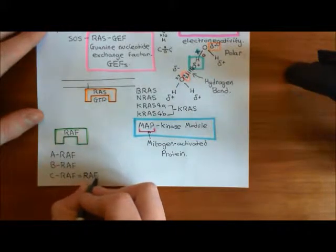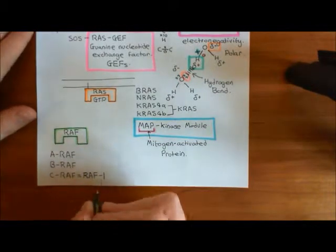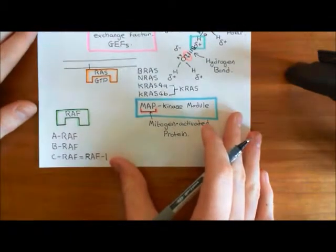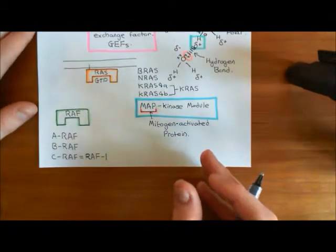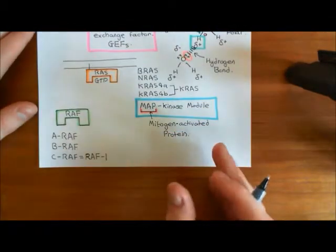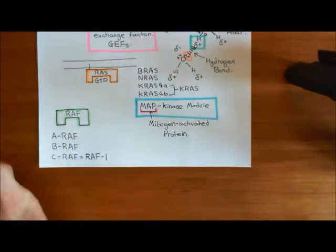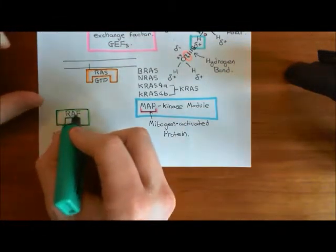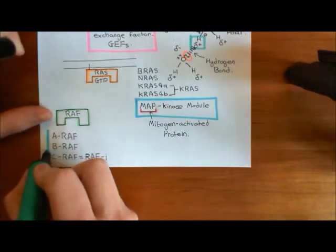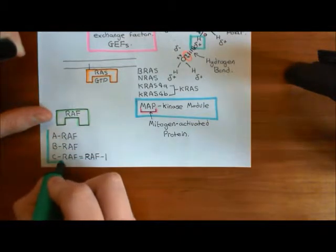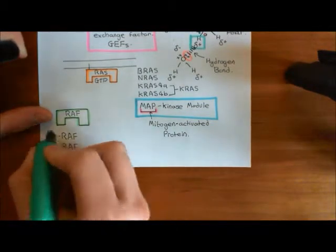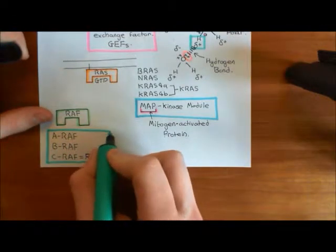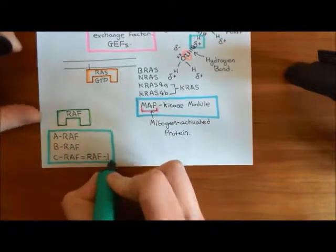All three of these RAF kinase enzymes do pretty much the same thing, which is that they phosphorylate the next enzyme along. So we will just call our protein here a RAF protein, meaning it's one of those three — ARAF, BRAF, or CRAF — but I don't really care which it is.